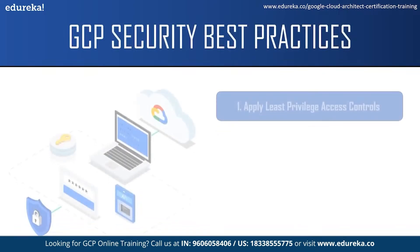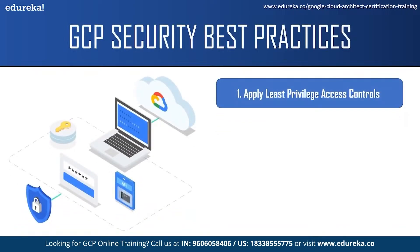The first best practice is to apply least privilege access control through Identity and Access Management. The principle of least privilege is a critical foundation element in GCP security — the concept of only providing employees with access to the applications and resources they need to properly do their jobs. Only selected users should be authorized to take action on specific resources.